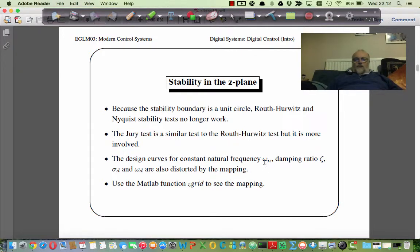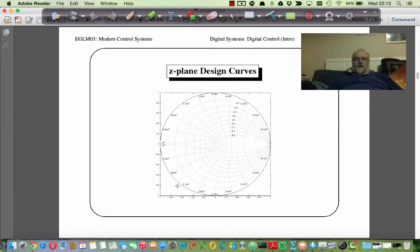Also, the design curves that we've been using for root locus for continuous system design, the constant natural frequency, the constant damping ratio lines, constant sigma D, which is related to rise time, and omega D, also get distorted by the mapping Z equals e to the ST. And if you want to see the sort of distortion you get, then you can run the MATLAB command zgrid, you get a picture that looks like this. And you can see the distortion on this grid. This is the unit circle. These lines here are the lines of constant damping. These lines here are the lines of constant natural frequency. And you can see that although they are sort of the right shape very close to the origin here, they become much more distorted as we move across the frequencies. And also we get this maximum frequency in here. If we exceed that, we get what's called aliasing and that kind of thing.